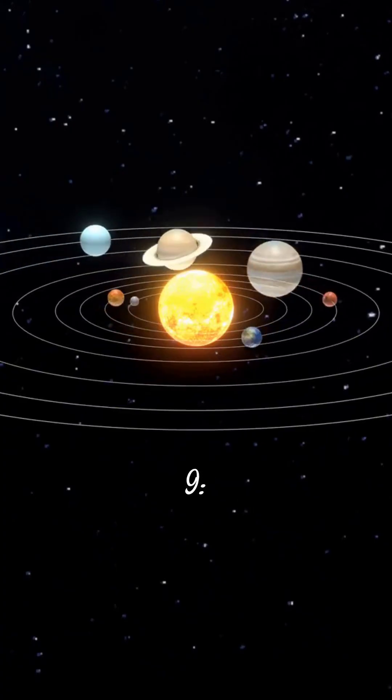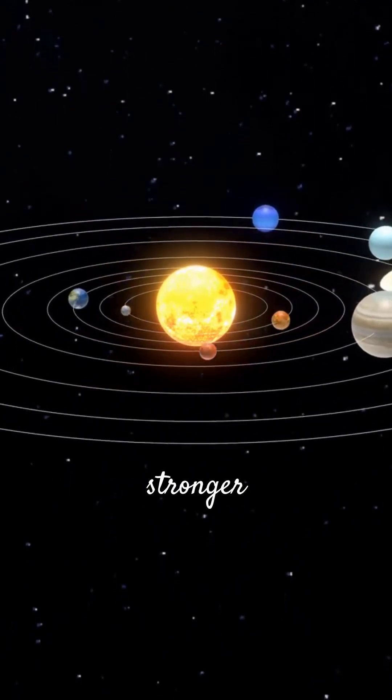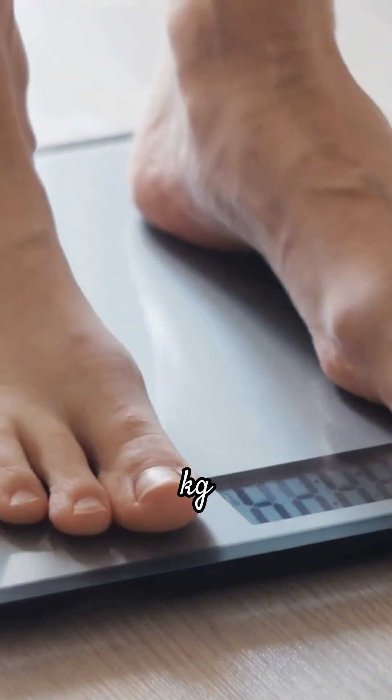Fact number nine, the Sun's gravity is 28 times stronger than Earth's. If you weigh 60 kilograms on Earth, you'd weigh 1,680 kilograms on the Sun.